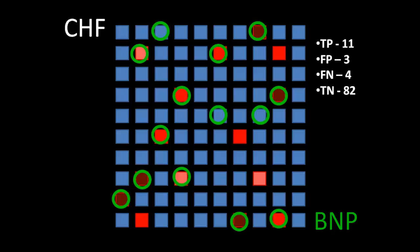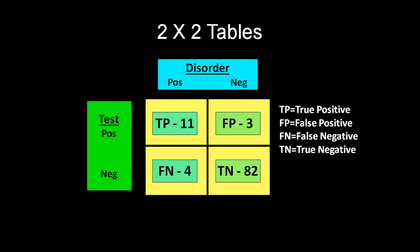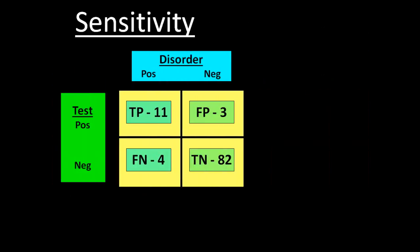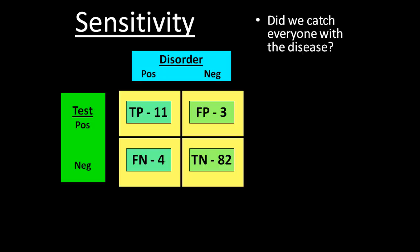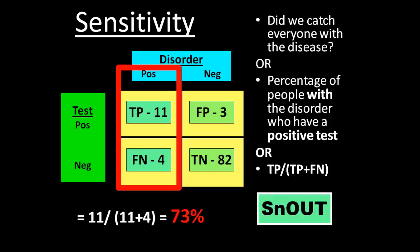That's important information, but it doesn't help us decide how much we trust the test. There are certain statistical parameters we can determine based on this information. We organize the information into a two-by-two table with those positive or negative for the disorder on the x-axis and positive and negative for the test on the y-axis. Let's go to our first descriptive statistic — sensitivity. Sensitivity answers the question: did we catch everyone with the disease? It's the percentage of people with the disorder who have a positive test. The way to calculate it is true positives divided by true positives plus false negatives. In this case, our sensitivity is 73%.